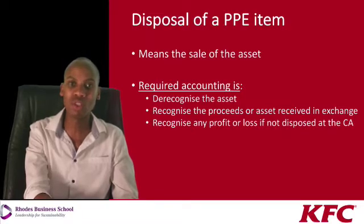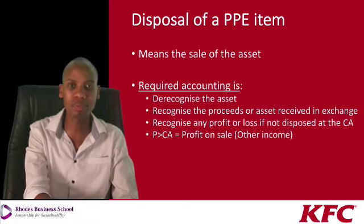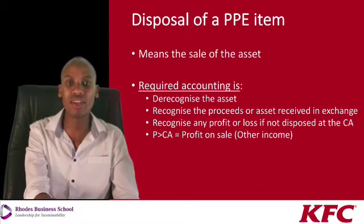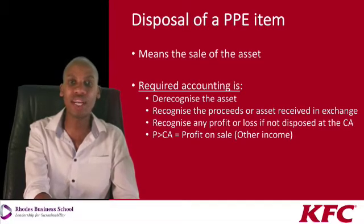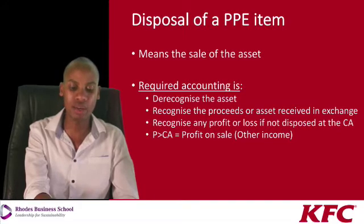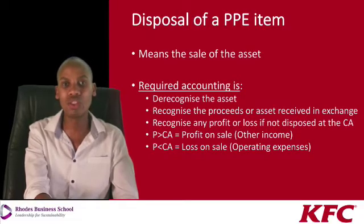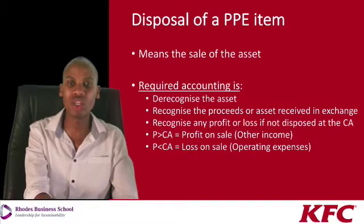We would also recognise any profit or loss realised from the disposal. The asset could be disposed for no profit or loss, which is a break-even case. We see a profit when the proceeds exceed the carrying amount of the asset — that profit forms part of our other income. Conversely, if the proceeds are less than the carrying amount, we realise a loss which forms part of our operating expenses.